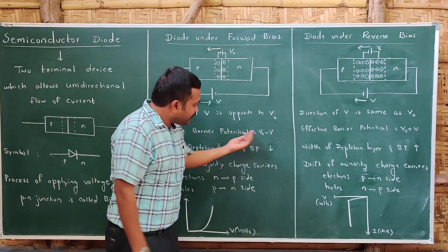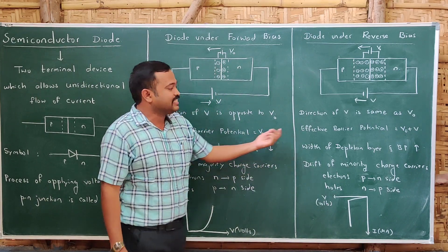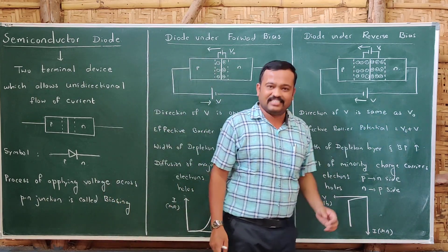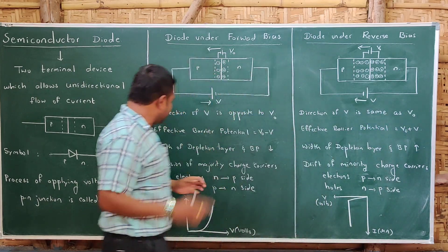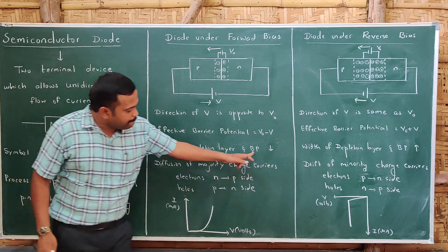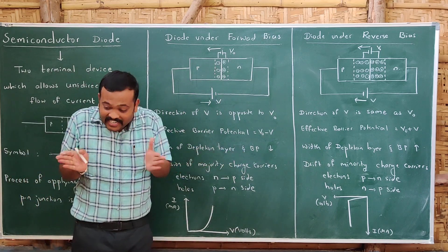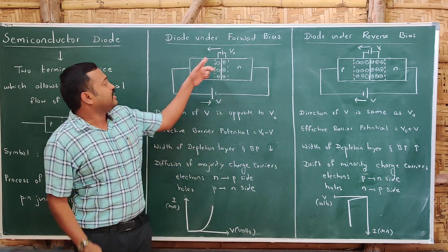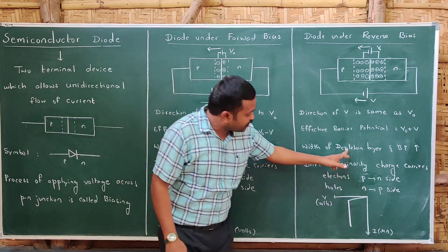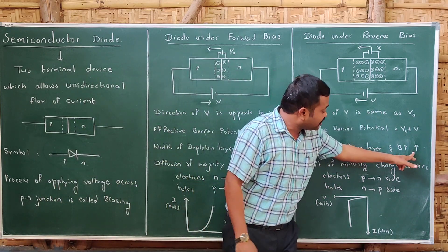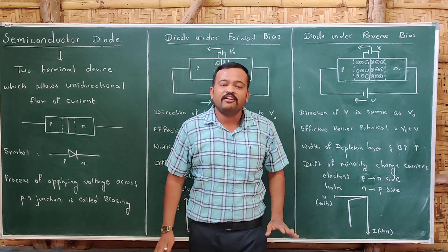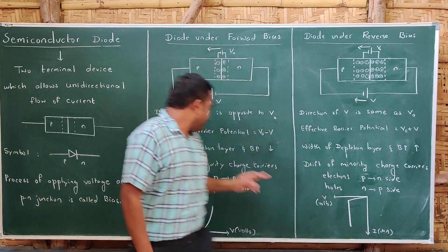In forward bias, the barrier potential decreases. In reverse bias, the barrier potential increases. So in case of forward bias, the width of the depletion region and the barrier potential decrease. In case of reverse bias, the width of the depletion region and the barrier potential increase.